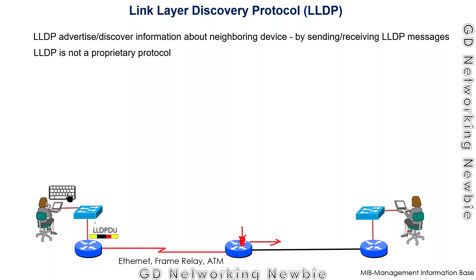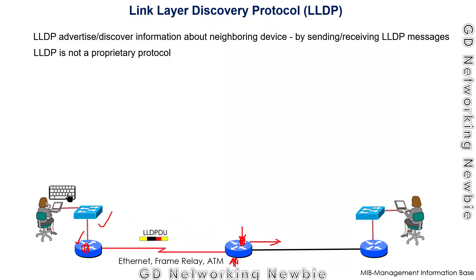I'll show the Packet Tracer demonstration after this brief discussion. If we have LLDP enabled on this router, it will start sending LLDP data units to the neighboring router. This is shown in one direction, but if the neighboring router is also LLDP-enabled, it will receive those messages and also transmit its own LLDP messages in return.